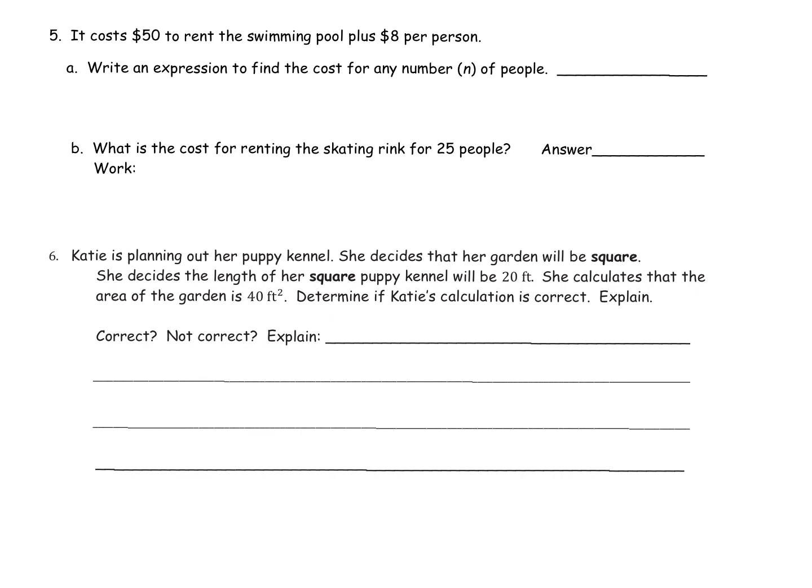Number five. It costs $50 to rent this swimming pool plus $8 per person. So think about our keywords right there. Plus means to plus. So those are really important words. First we need to write the math problem for N people. So it's $50 to rent plus $8 per person. And they said to use an N so we'll change my P to an N. So it's 50 plus 8N. 8 is being multiplied with the N so we just smoosh them together. If you want to throw the times symbol in there like I did, that little dot, that's okay.